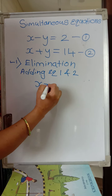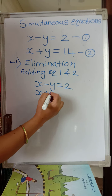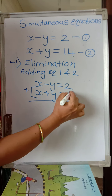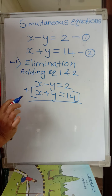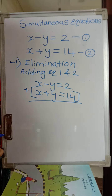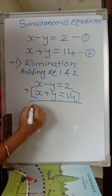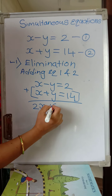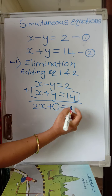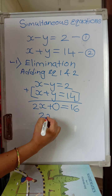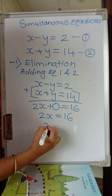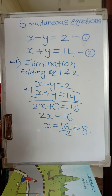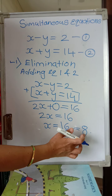Adding x minus y equals 2 and x plus y equals 14: while adding, put a plus sign — signs will not change. x plus x gives 2x; y minus y gives 0. So 2x equals 14 plus 2, which is 16. Therefore x equals 16 divided by 2, which equals 8. So we got x equal to 8, which matches what we found earlier.